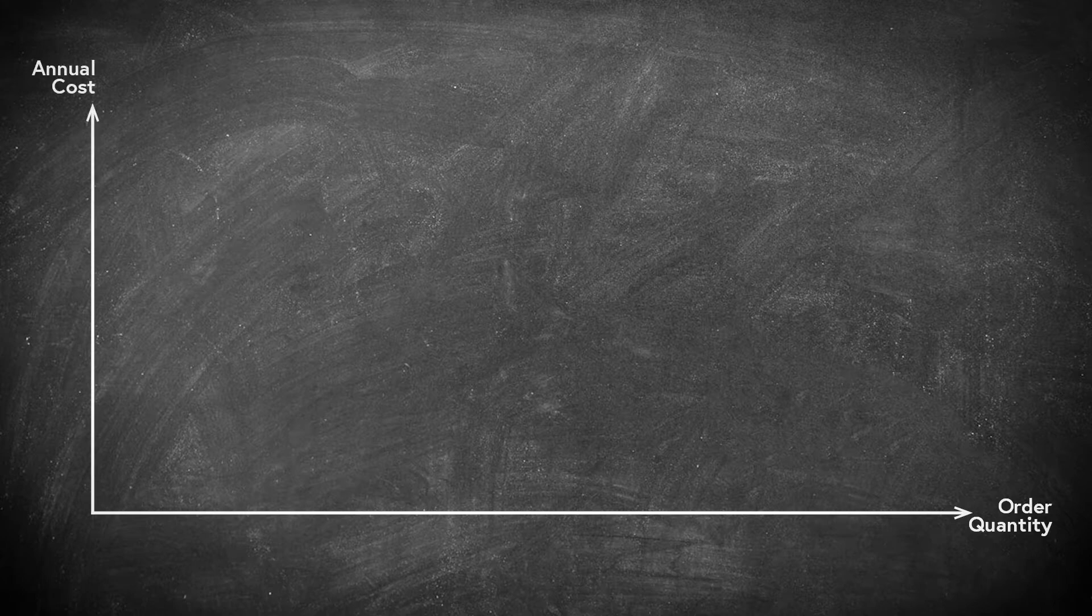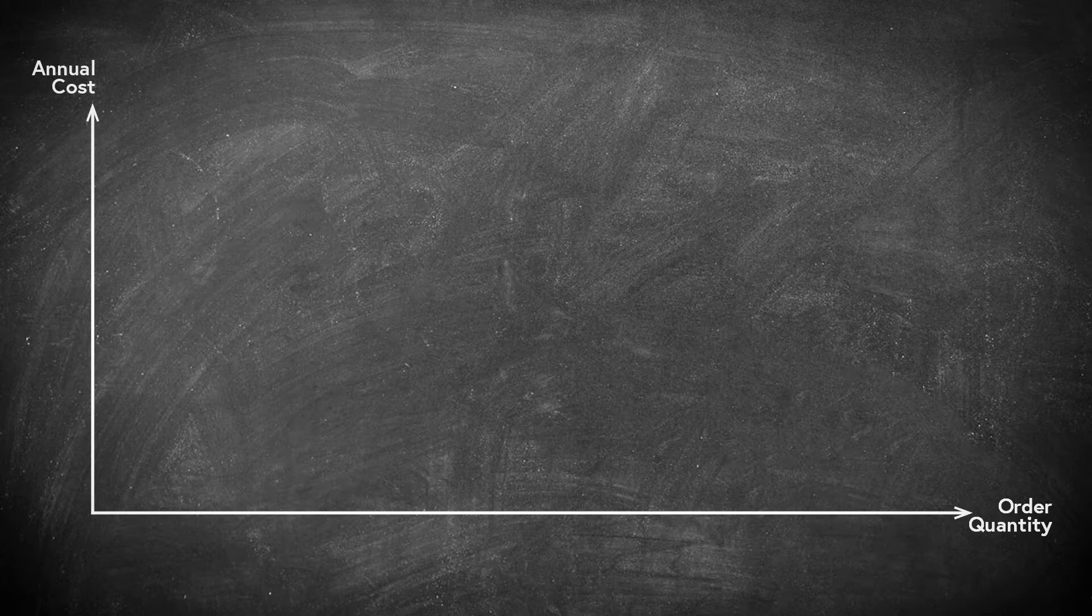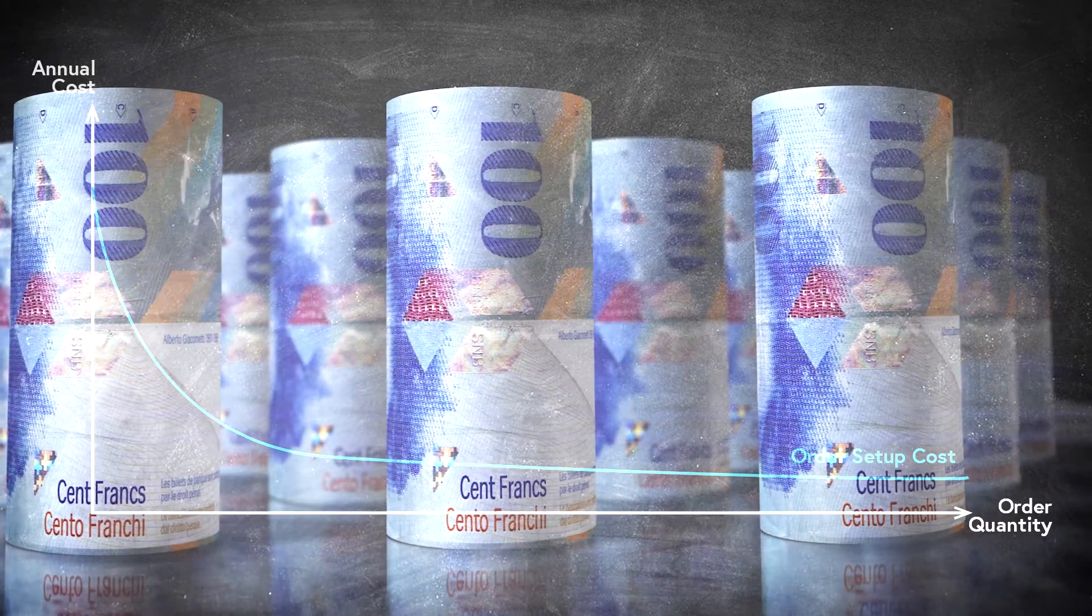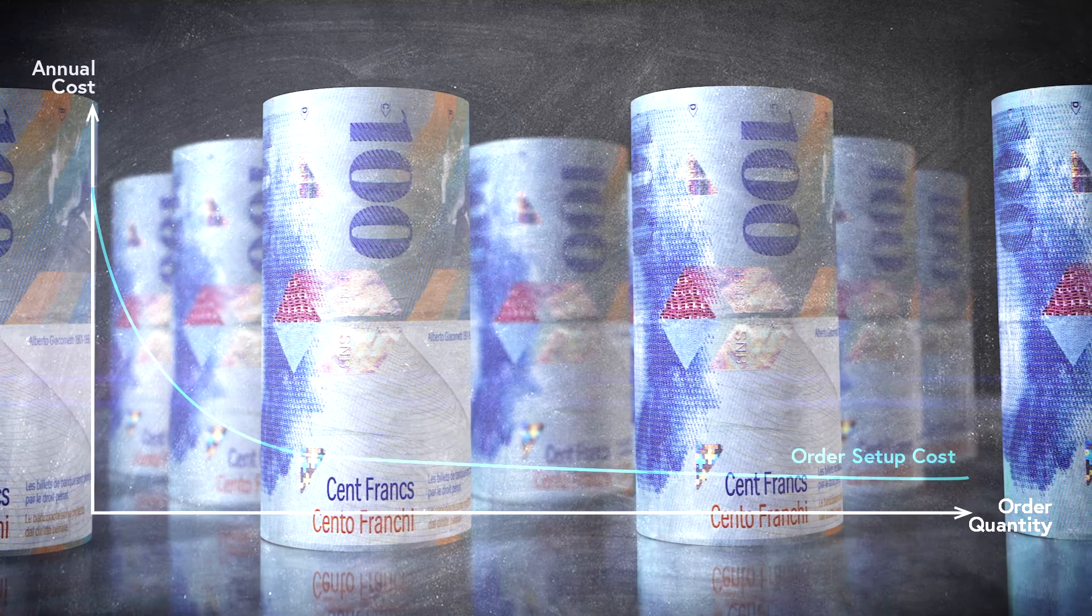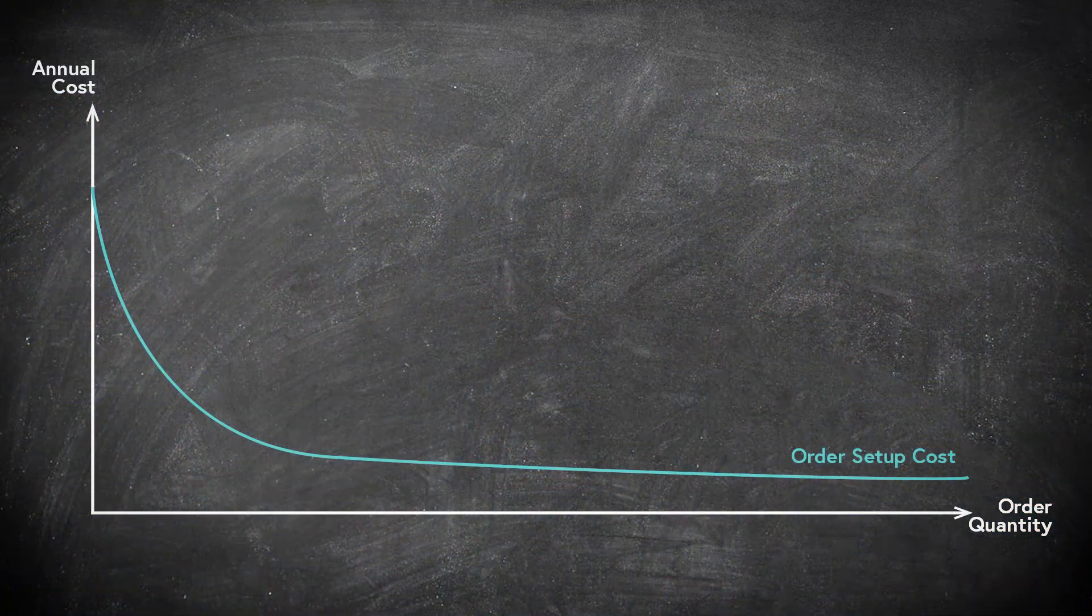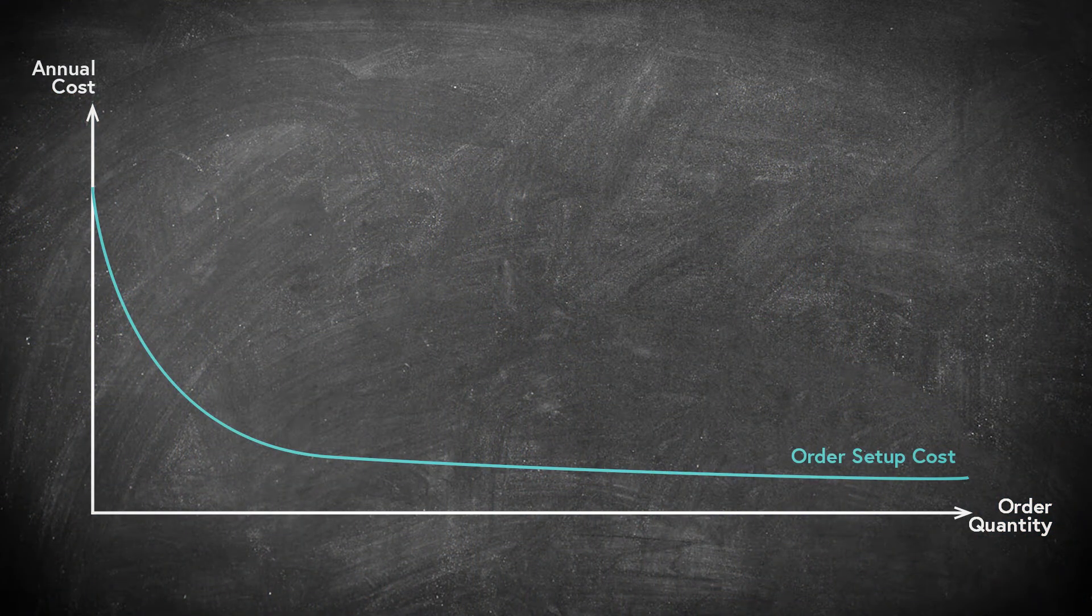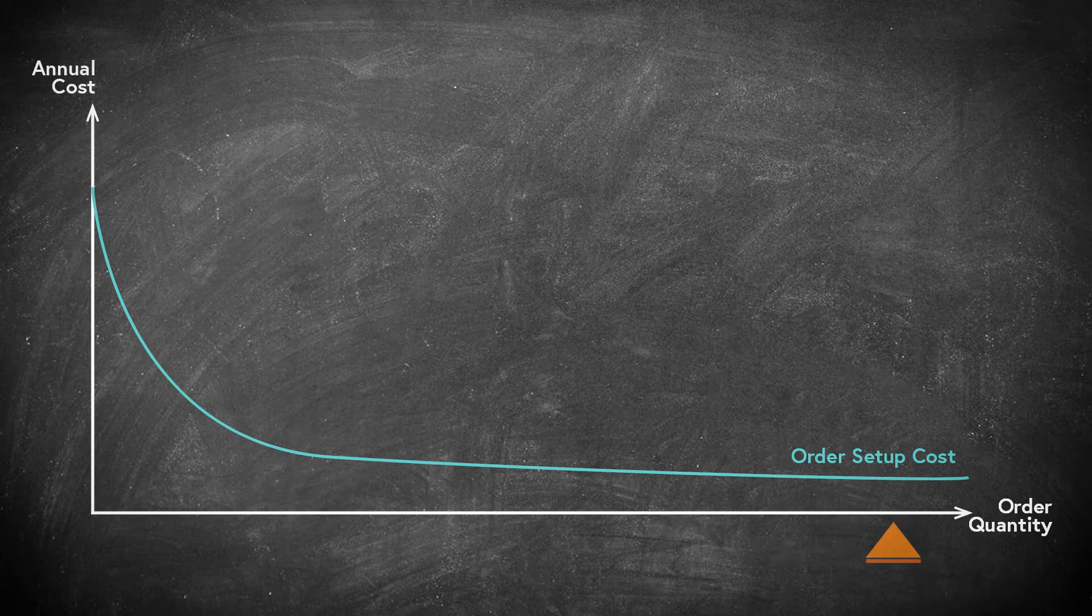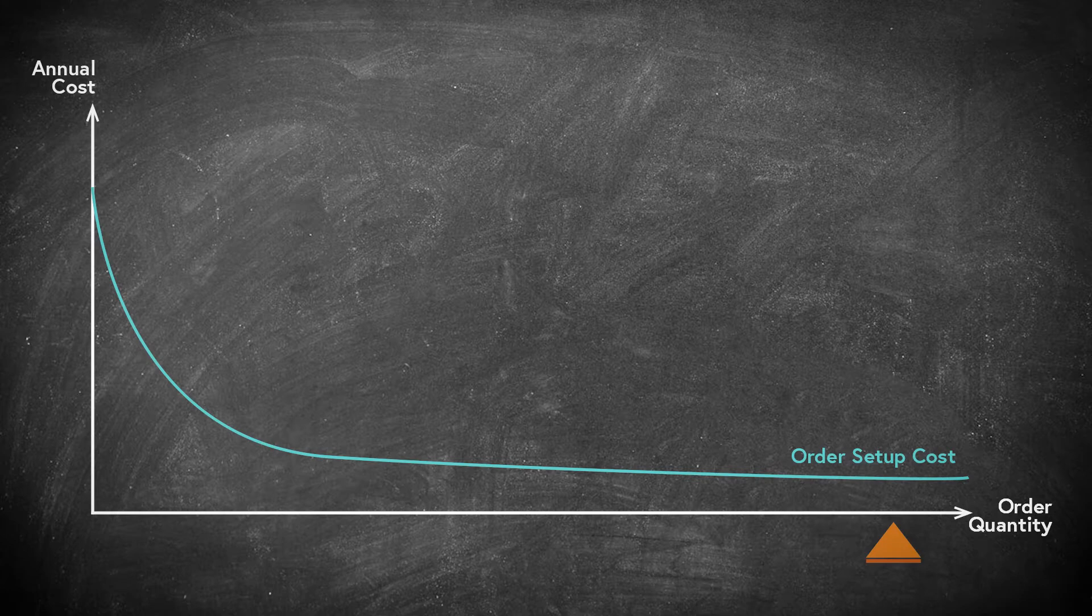Recall, we only consider two costs. First, the order cost is a fixed sum we pay every time we put in an order. In Switzerland this sum is often arbitrarily set to 200 or 300 Swiss francs. Now, the more products we order at the same time, the fewer times we have to put in an order. If we order only one product at a time, the annual costs are very high. If we order a big batch of all we need for a year, we only incur the order setup cost once, as shown with this exponentially declining curve.